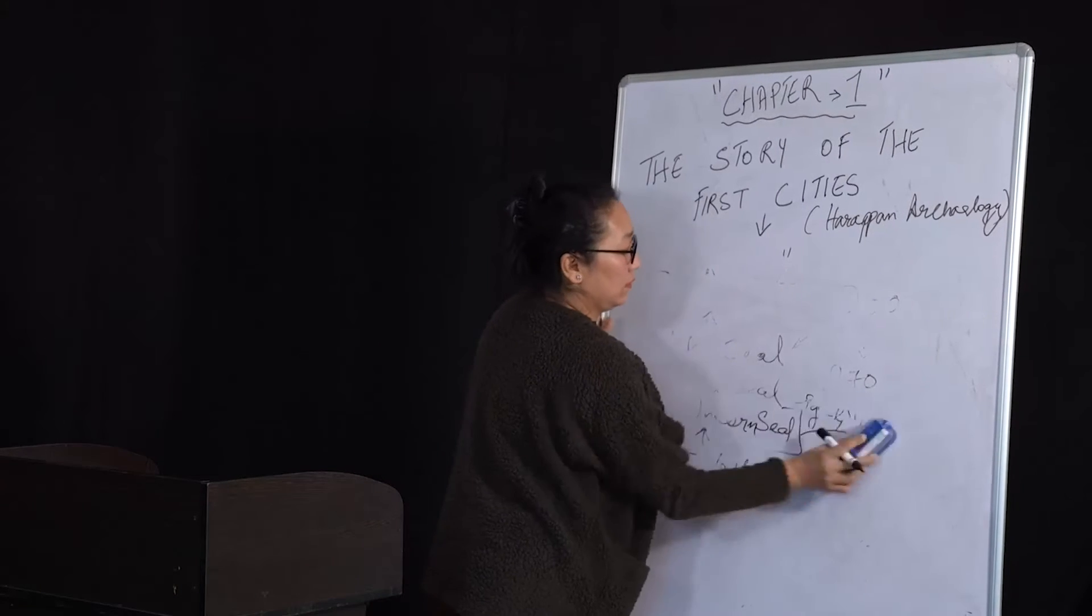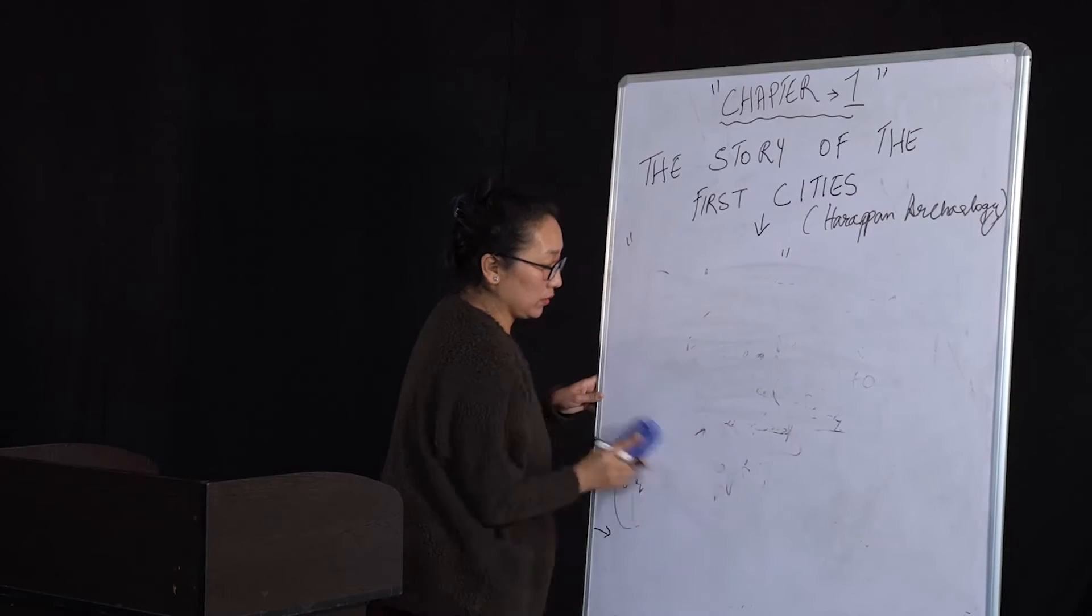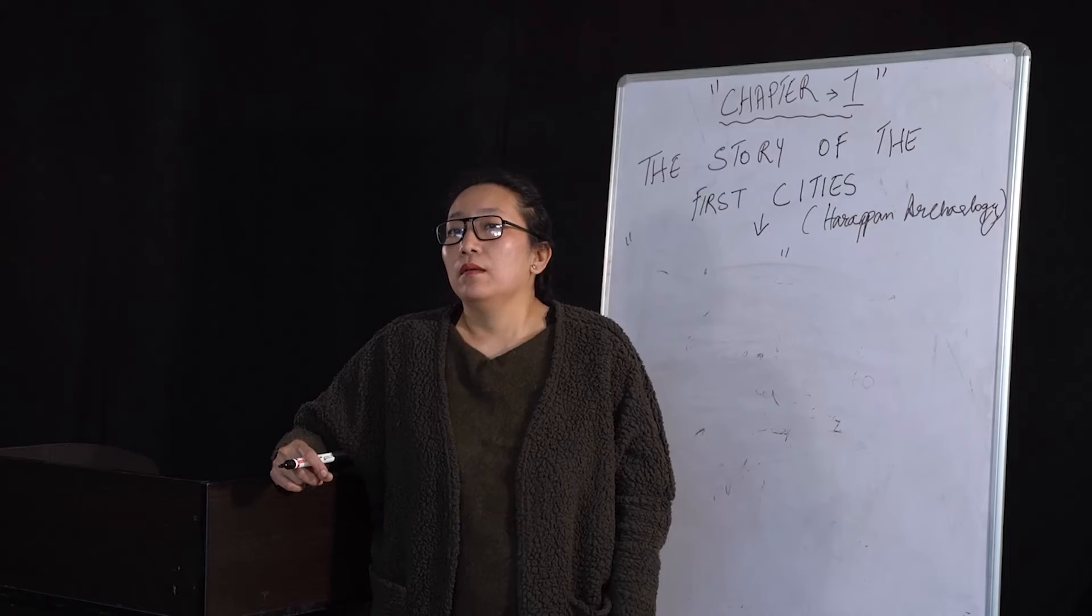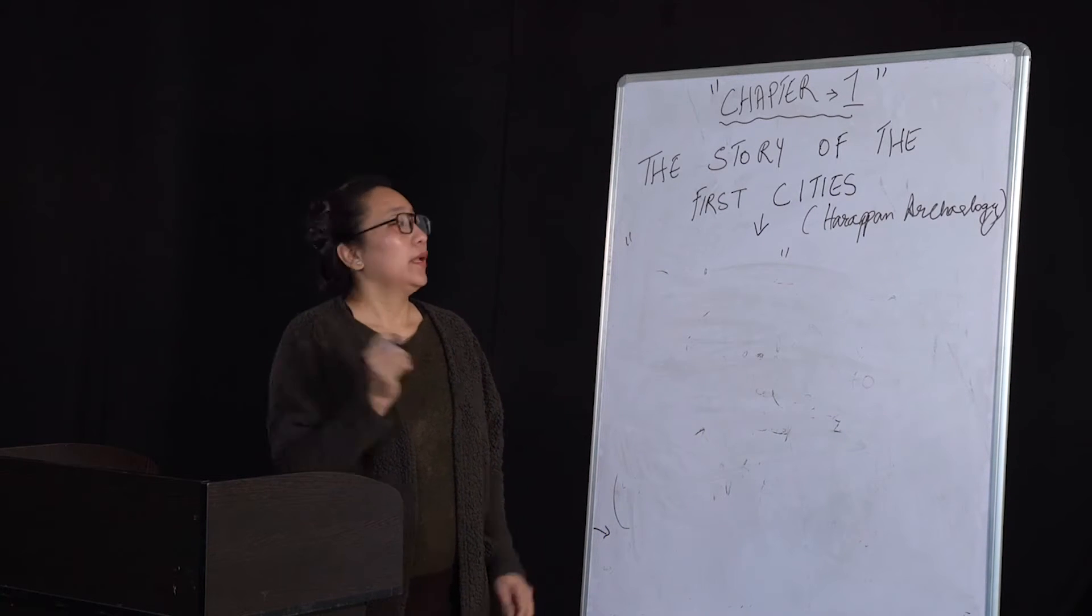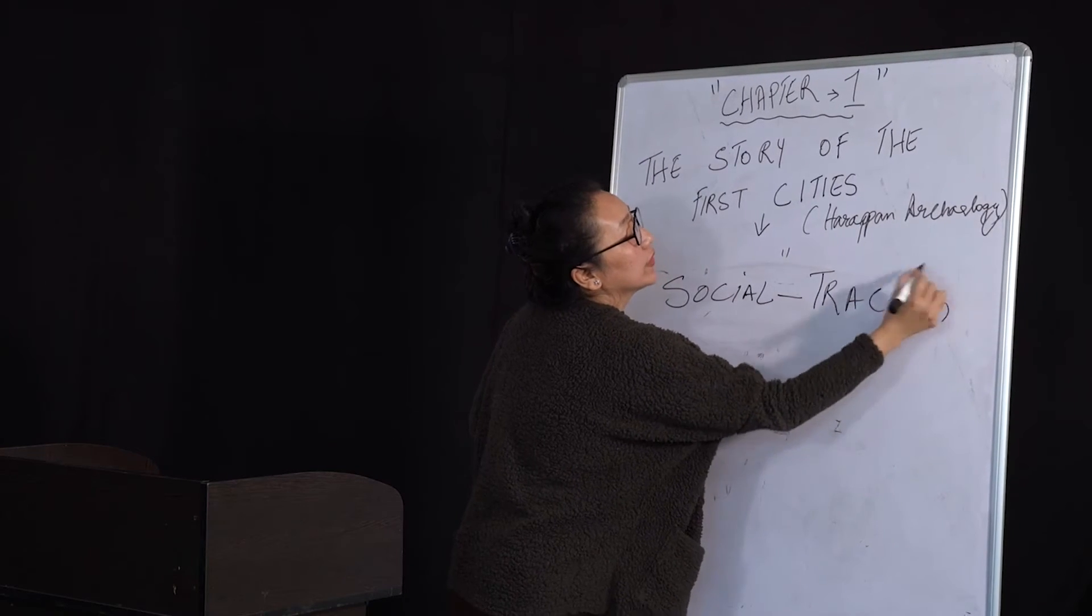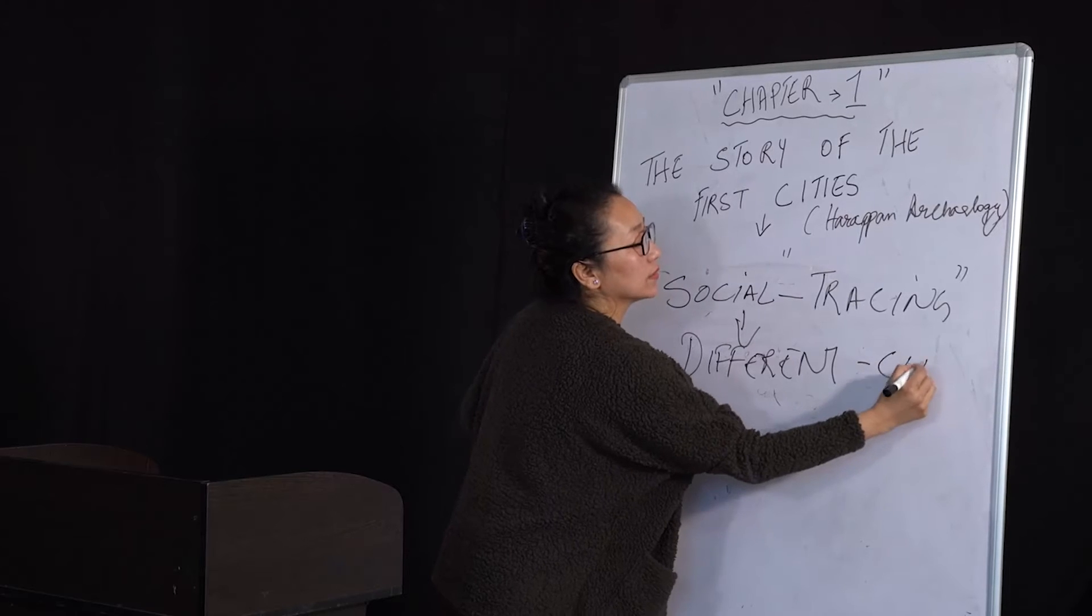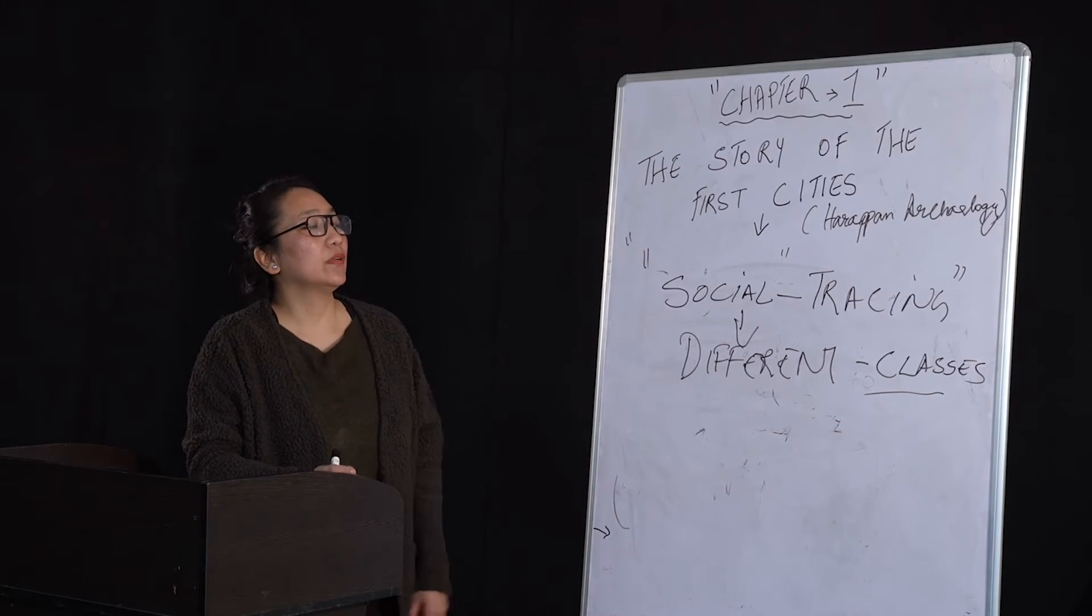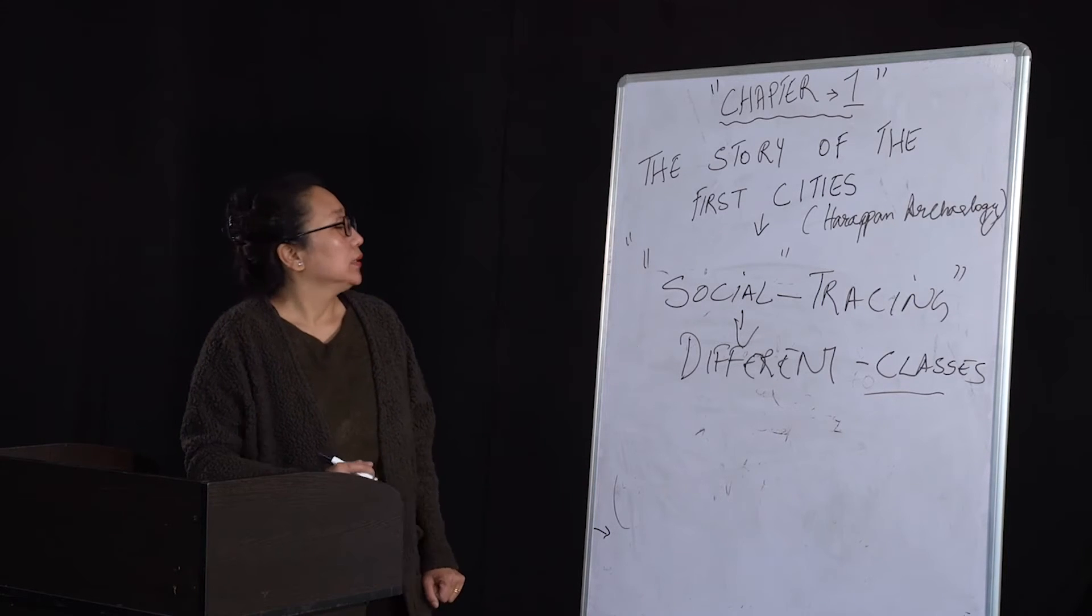Next we will see the society. Such a big civilization existed and this civilization could run only because of the people or the society. Without society there would have been no civilization. To understand the society, archaeologists follow certain patterns called social tracing. Social tracing to see the differences, different classes - high class, middle class, or lower classes. But before understanding the different classes, the Harappan civilization, we can say the idea of Varna, division of Indian society, was yet to be implemented.